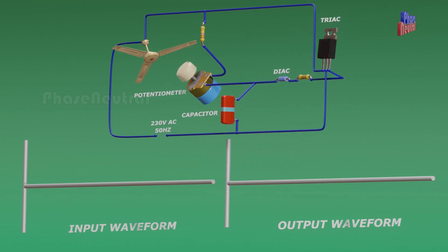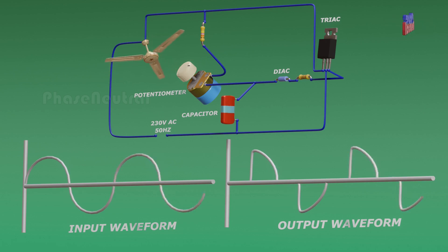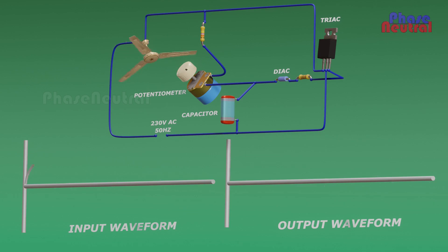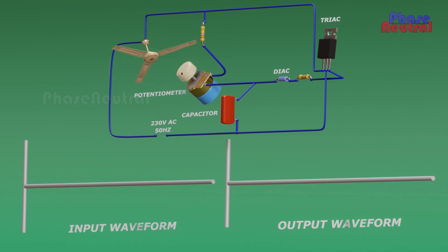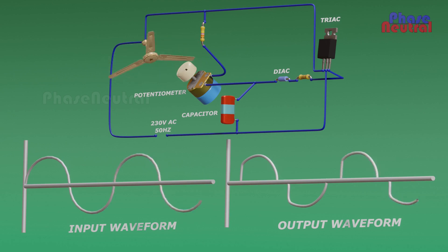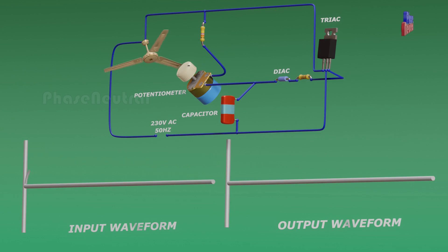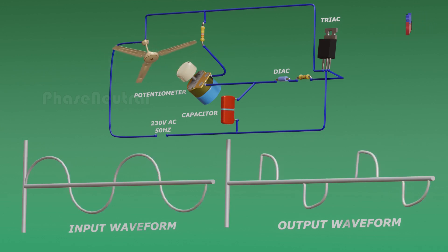When you rotate the knob to maximum speed, the capacitor charging time becomes less due to the variation of the potentiometer resistance, which makes the output voltage high and the fan runs at full speed. When you rotate the knob to minimum speed, the capacitor takes more time for charging, which changes the output waveform and the fan runs at slow speed.